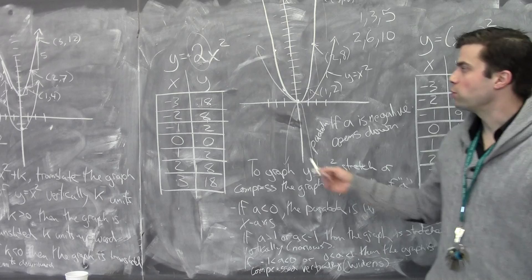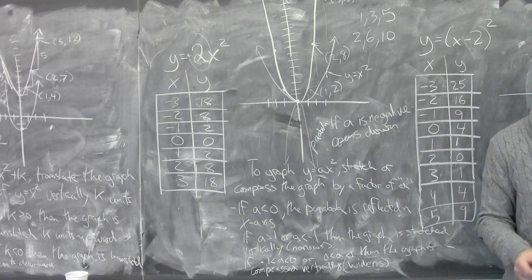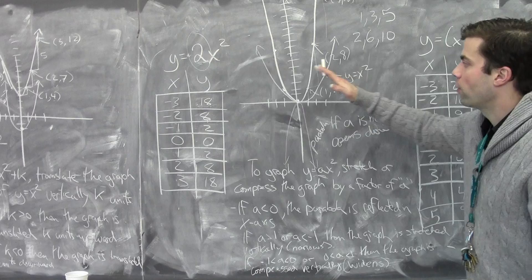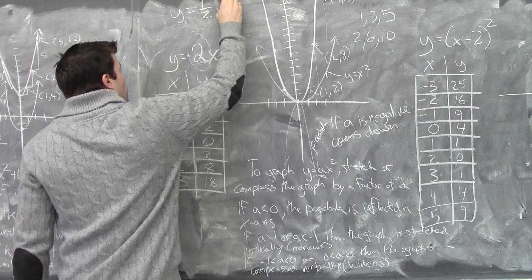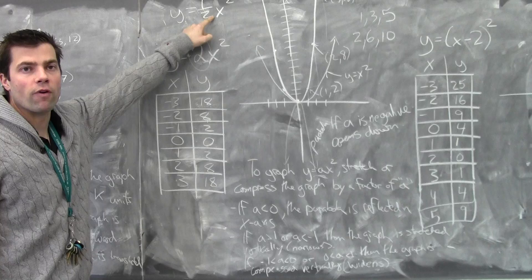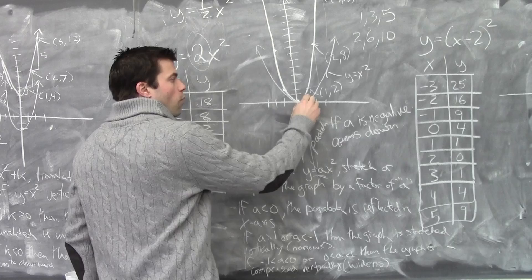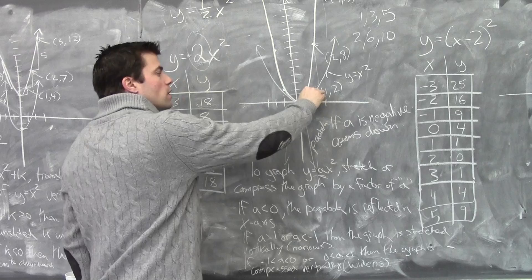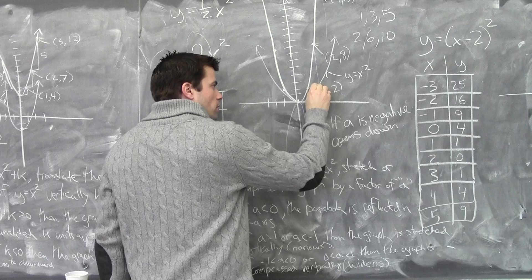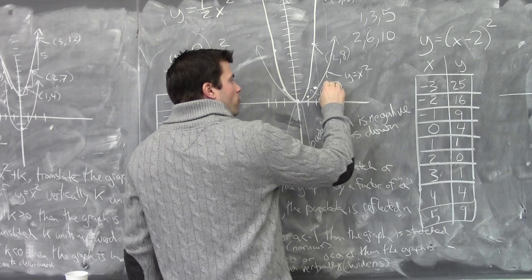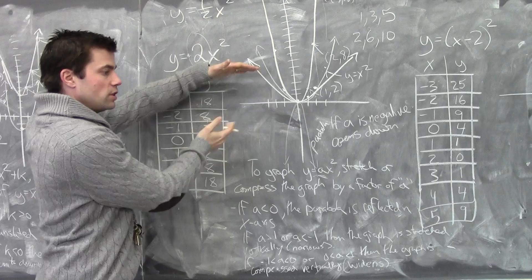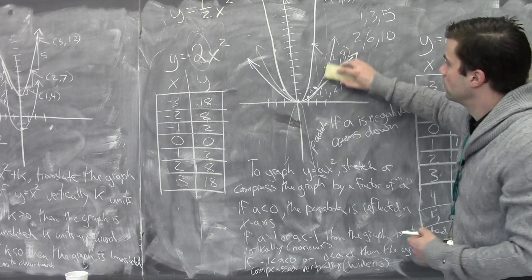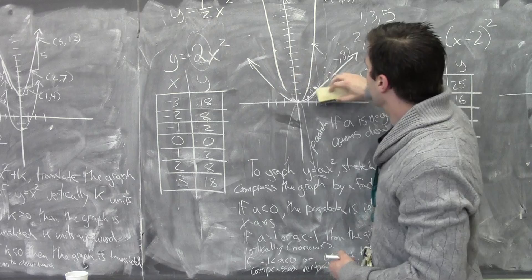If A is between 0 and 1 — or between 0 and -1 — think of it like a fraction less than 1. Then what we get is a compression. For example, y equals one-half x squared: now you multiply the step pattern 1, 3, 5 by a half. So instead of going 1 over, 1 up, you go 1 over, one-half up. Then 1 over, one and a half up. Then 1 over, two and a half up. You get this compression — think of the graph being squished down.